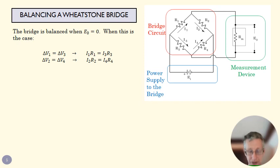So if our bridge is balanced, that means E0 here is zero. That means we have the same voltage here that we do up here. We can write these equations here. This is telling us that the delta V - the voltage drop across one - must be the same as the voltage drop across three.